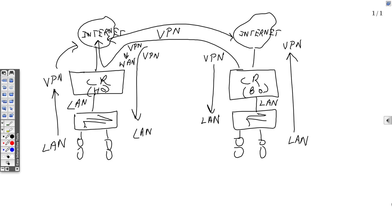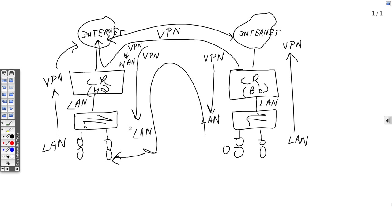That covers the basics of zones and how rules are created in CyberROM. You need to create the respective rules after creating the VPN, or else traffic will not flow. For example, if a host tries to ping another host across the tunnel, the ping will not flow until you have VPN to LAN and LAN to VPN rules on both sites.